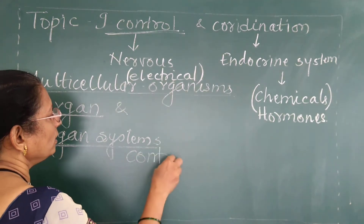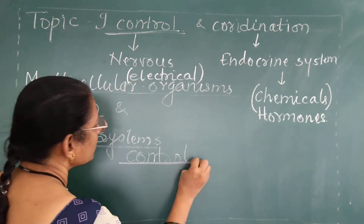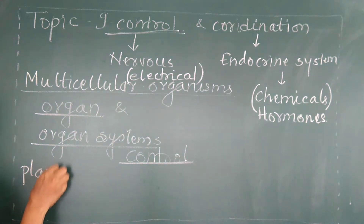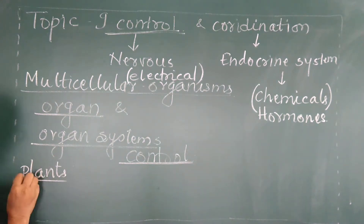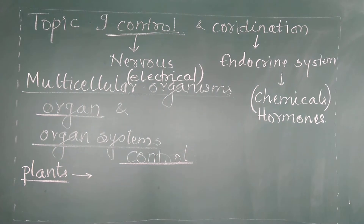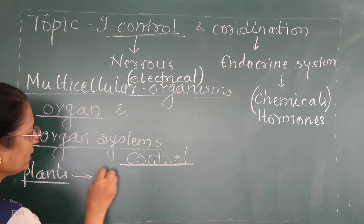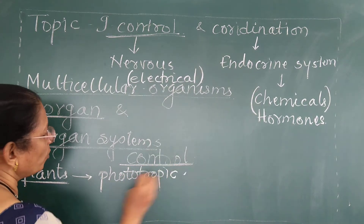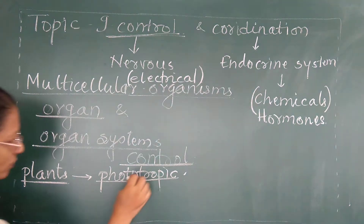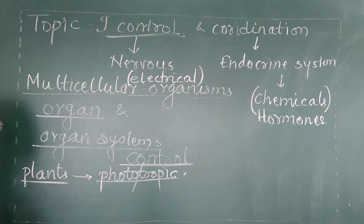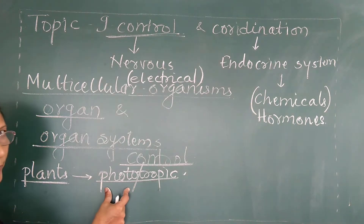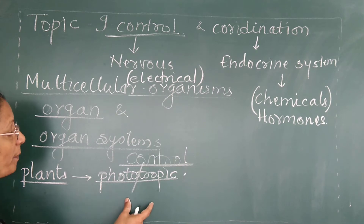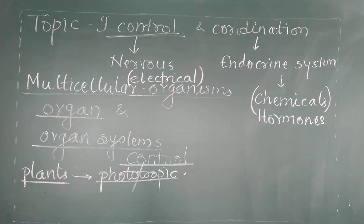We consider control in case of plants first. In case of plants, it is because of various types of stimulation. We can consider phototropic movement. This phototropic movement is because of light — that means it is light sensitive. Roots are not attracted towards the light; these are geotropic. If you consider the shoot, shoot is phototropic — it is attracted towards the light, movement towards the light.